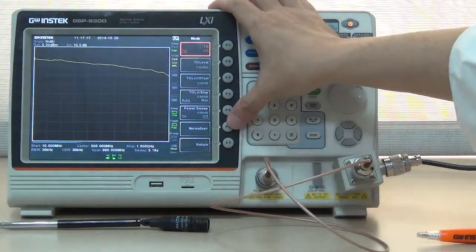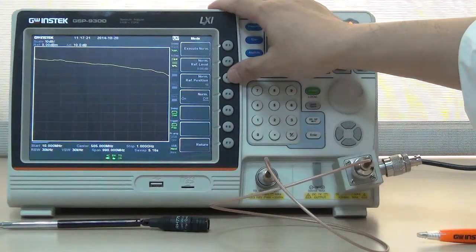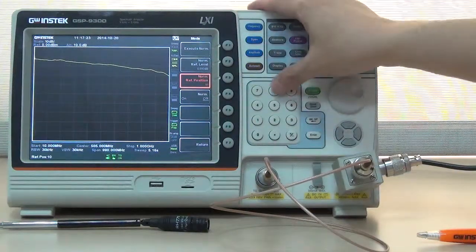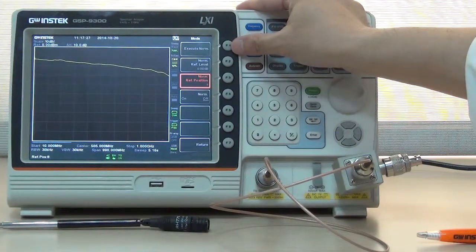Press F3 Start Frequency, input 1000 MHz. Press F6 Normalize and select F3 Reference Position and input 8 to set reference position at Division 8.